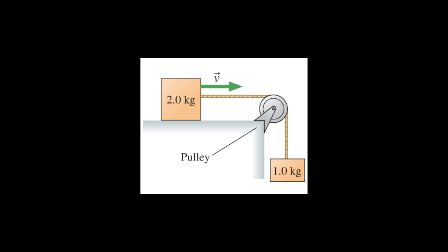Because the blocks are connected by an inextensible cord, when the 1-kilogram block goes down one meter, the 2-kilogram block moves right by one meter. Their displacements, velocities, and accelerations are all the same. So I won't need separate acceleration variables — both objects share one acceleration. All I need to proceed is two thoughtfully drawn free body diagrams, and here they are.